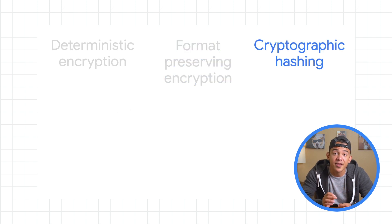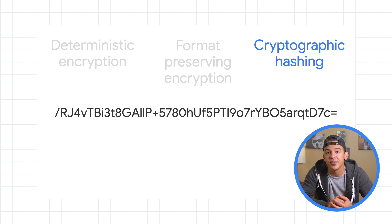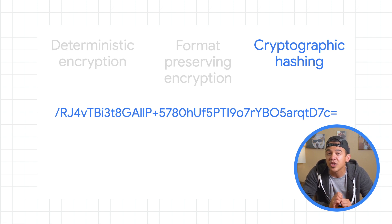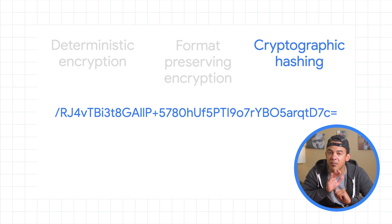The third method is cryptographic hashing. DLP replaces sensitive data with a hashed value. Unlike the other two methods, cryptographic hashing uses a one-way token so it can't be reversed. It's the perfect solution if you want each unique value to be transformed into a corresponding unique hash value but don't necessarily want it to be reversible.